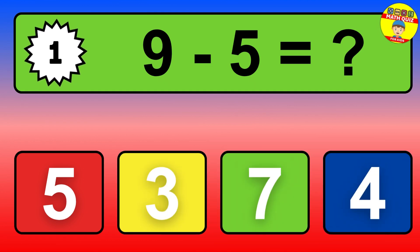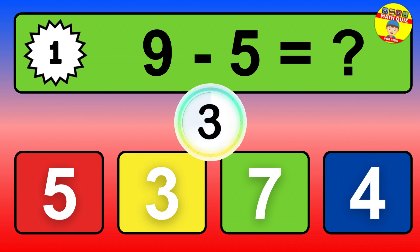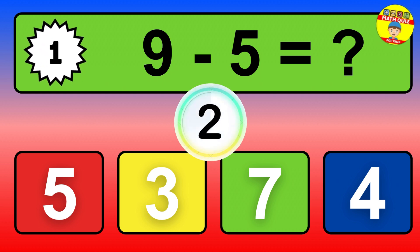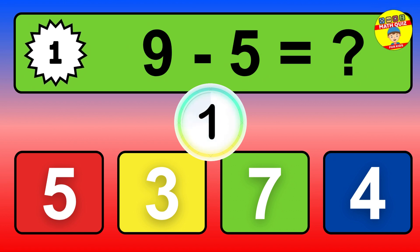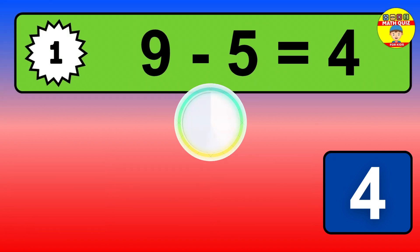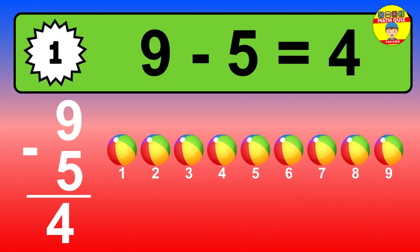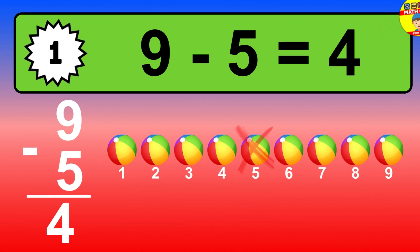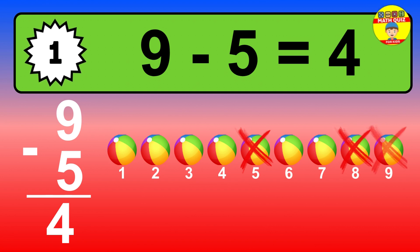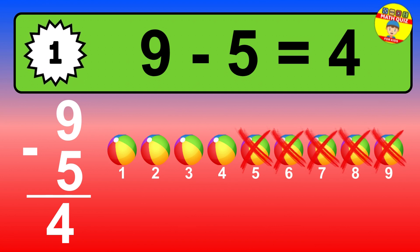Question 1. 9 minus 5 equals what? So the answer is 9 minus 5 is 4. Let's count it. 1, 2, 3, 4.